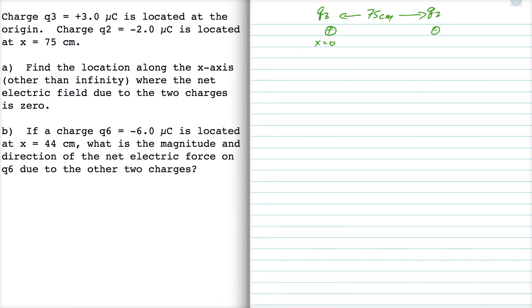And we want to know where along the x-axis the electric field equals zero. Well, it's got to be in one of these three domains. And it can't be in between the two charges because the electric field due to the two charges—the electric field due to charge 3 points to the right, and the electric field due to charge 2 also points to the right. So there's no place in the middle there that the net electric field can cancel out.